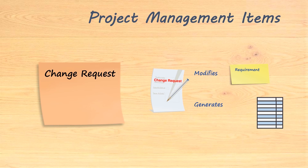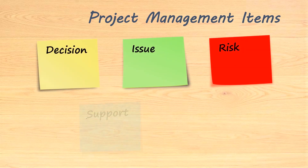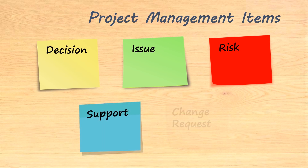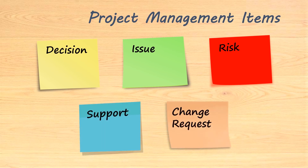So, in a nutshell, these are the five standard project management items that I definitely recommend you to have in Jira: Decisions, Issues, Risks, Support, and Change Requests.